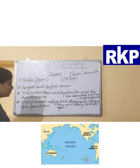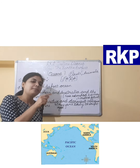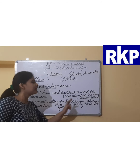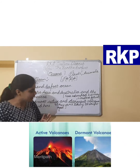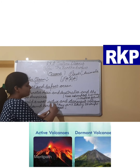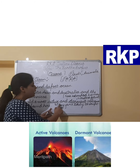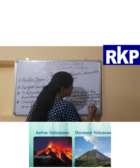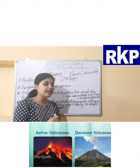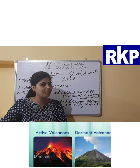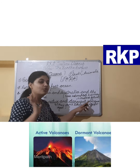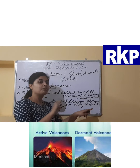Here you can see Asia continent and Australia continent. The Pacific Ocean separates them from North America and South America. To the east of Asia and Australia there is the Pacific Ocean, and to the west are the Americas. So Pacific Ocean separates Asia, Australia, North America, and South America.